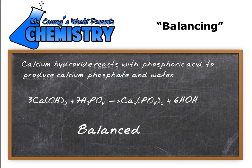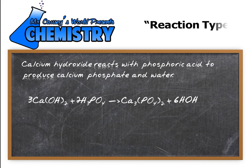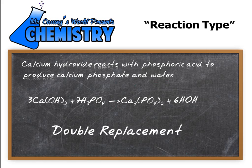Now we want to tell what type of reaction it is. What type of reaction is this? Well, it's double replacement. Note that you have the OH switching places with the PO₄, and you have hydrogen combining with the OH's. So we have a double replacement reaction.